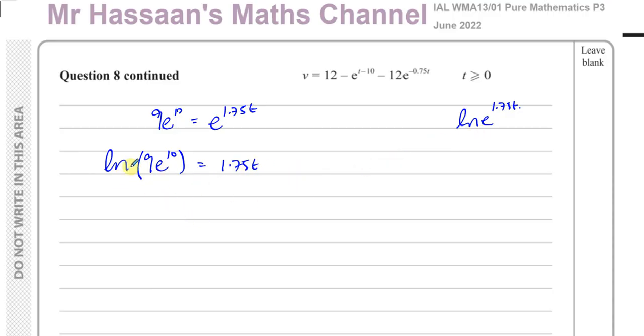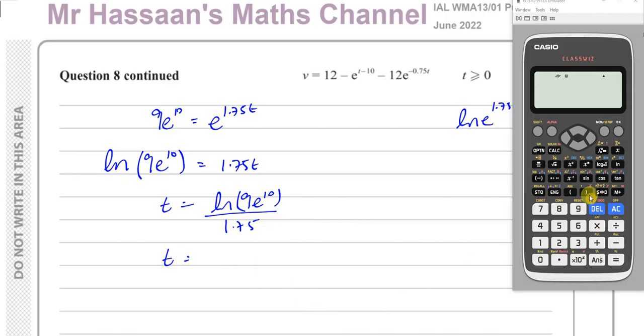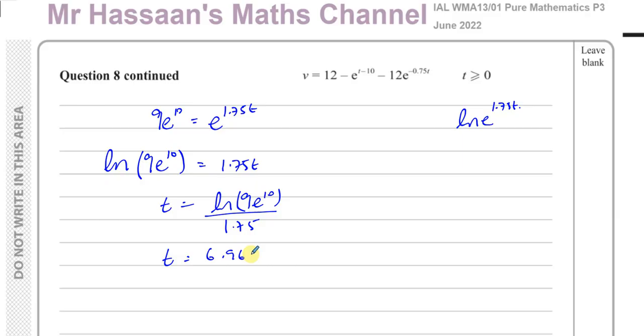So now I can, if I want to, I can split this up as well. If I want to rewrite it, I can leave it like this. It's not a big problem. So I have t is equal to ln of 9e to the power of 10 over 1.75. And so that gives me, if I use my calculator, that gives me, so I've got ln of 9 times e to the power of 10, close that bracket, over 1.75. That gives me 6.9698. 6.9698 goes on like that.